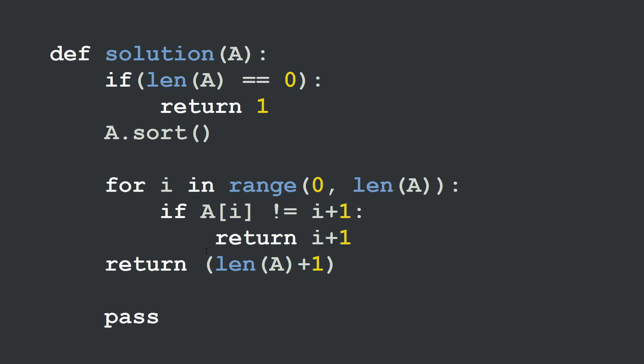Now our second edge case is if we reach the end of the array, the end of the list, and we haven't found any elements for which this condition here is true, which means that all the elements in the array are consecutive.